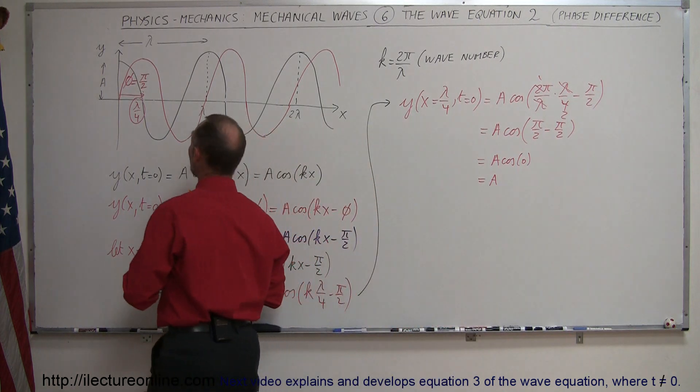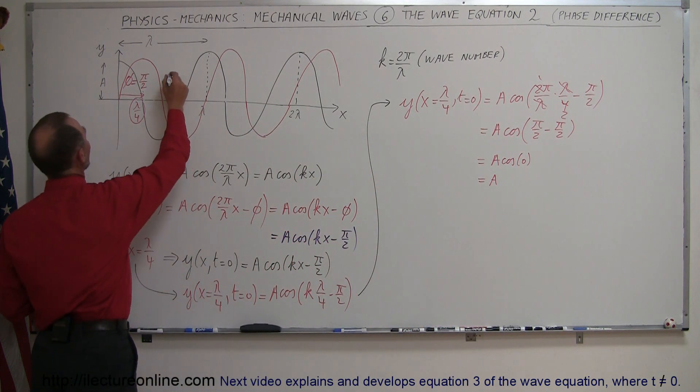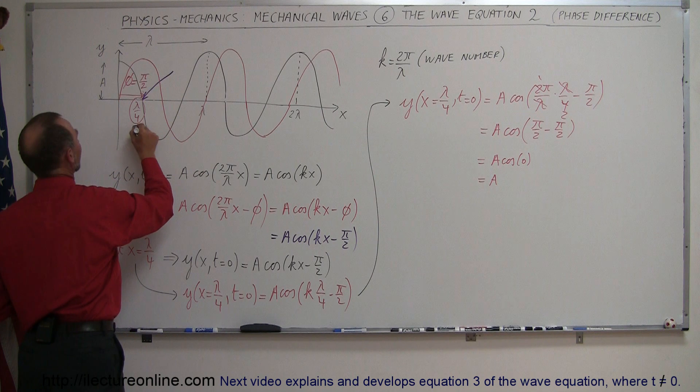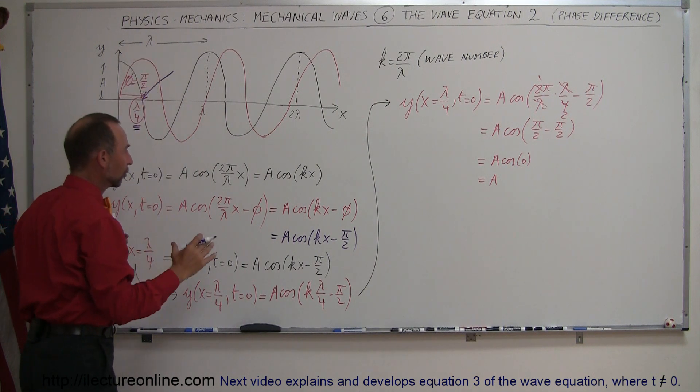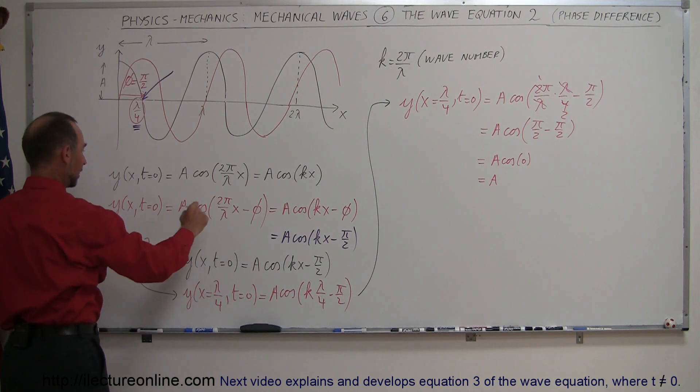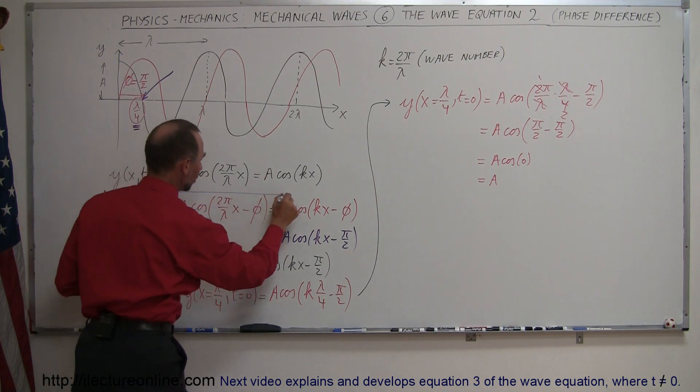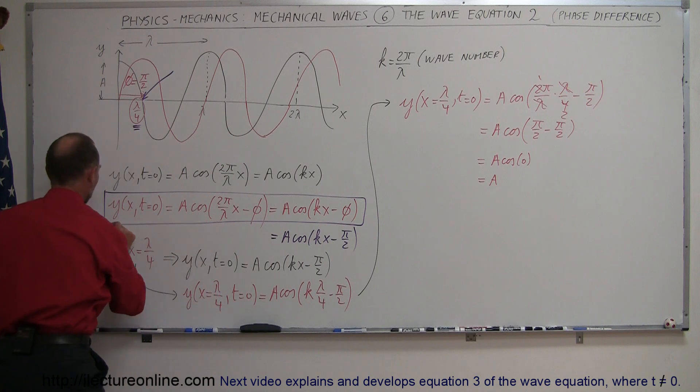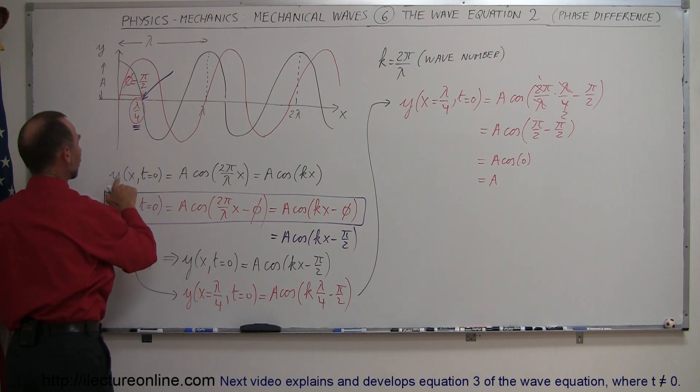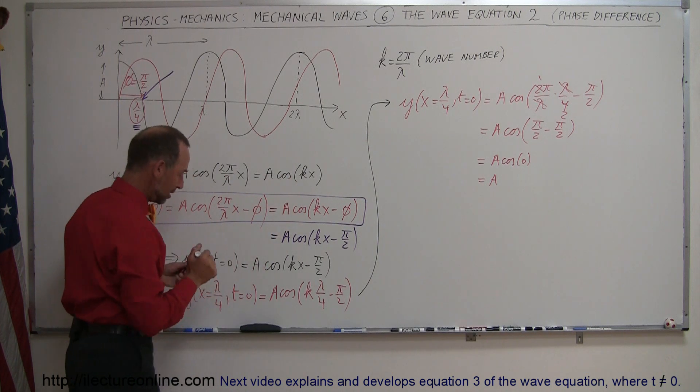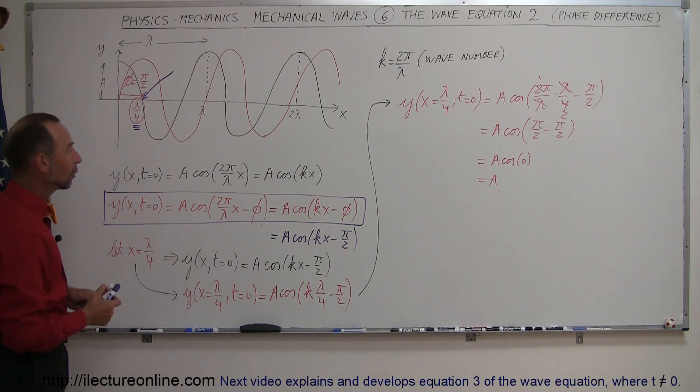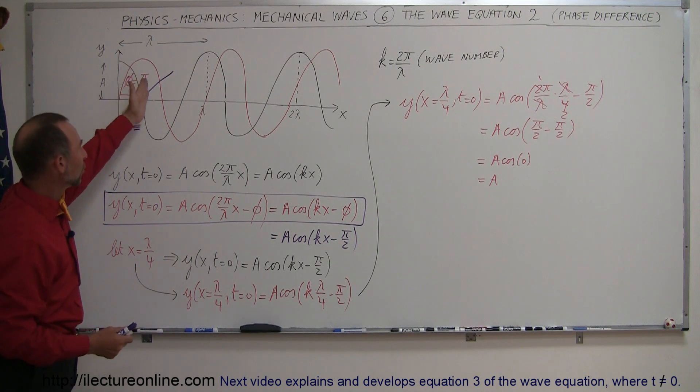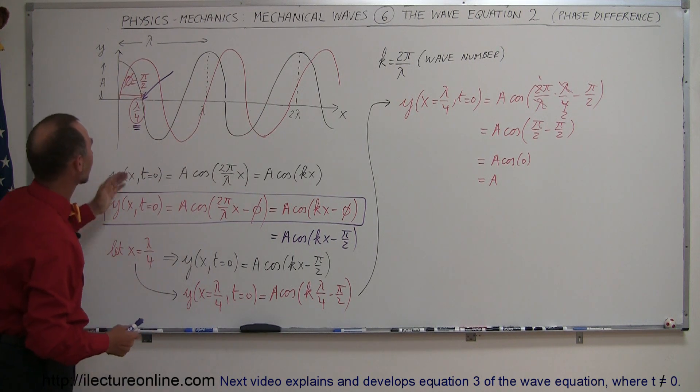So what I was trying to show you is that if we plug in this value for x, which is of course equal to lambda over 4, we should get a as a result, which proves that this is a good representation of a wave equation where time is kept equal to 0, so that y is simply a function of x, when it's shifted by the amount of phi, the phase angle as we call it, that we get the correct equation that describes the red wave right here instead of the black wave.